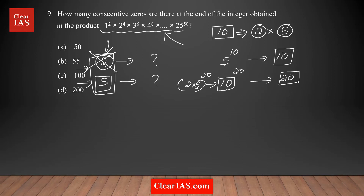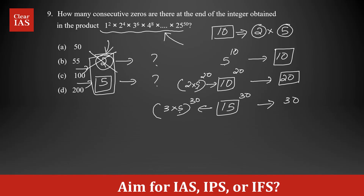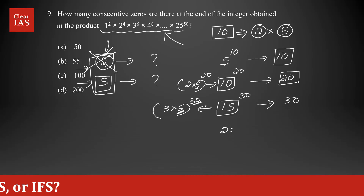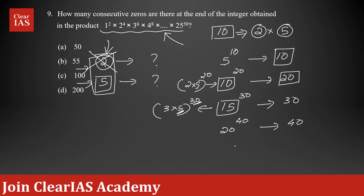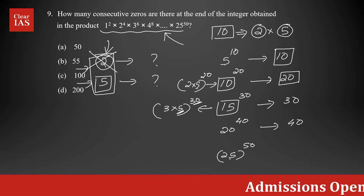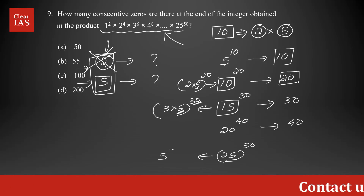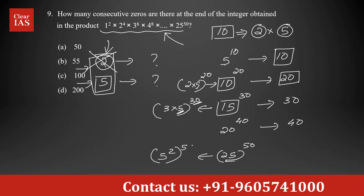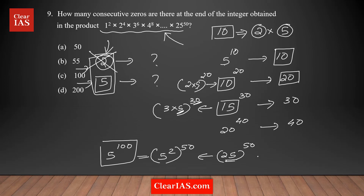After that comes 15 to the power 30. Since 15 = 3×5, there are 30 fives from this term. Next is 20 to the power 40 — since 20 = 4×5, that gives 40 fives. The last multiple of 5 is 25 to the power 50. Be careful: 25 = 5², so there are two 5s in 25. Using exponent rules, 25 to the power 50 equals 5 to the power 100, giving us 100 fives.